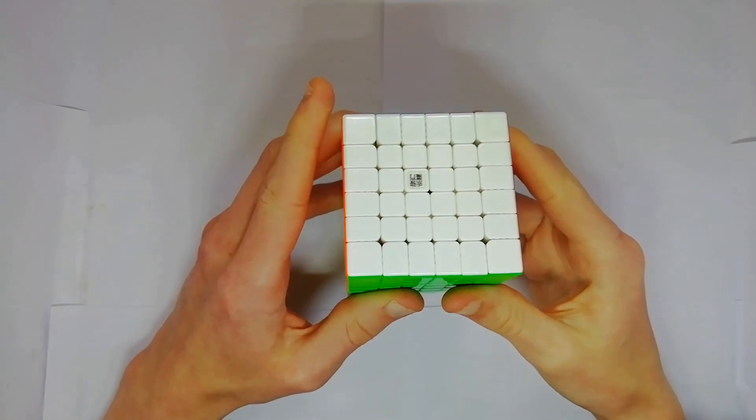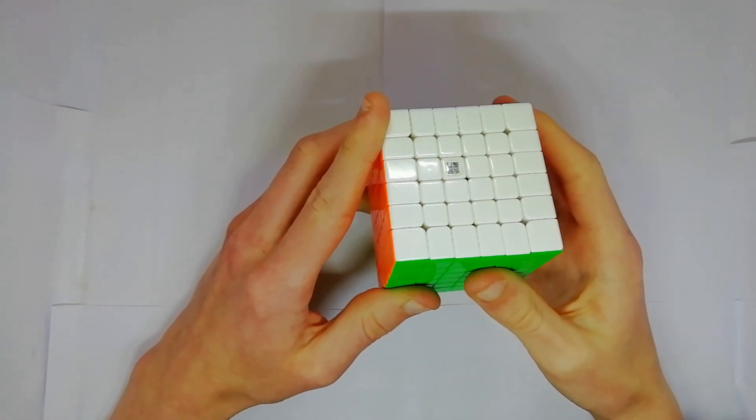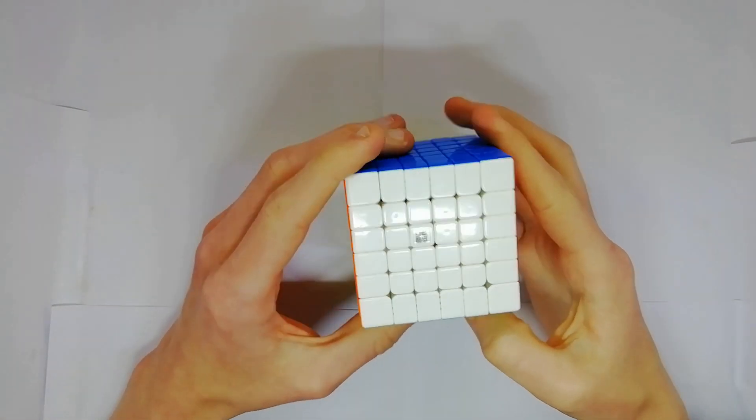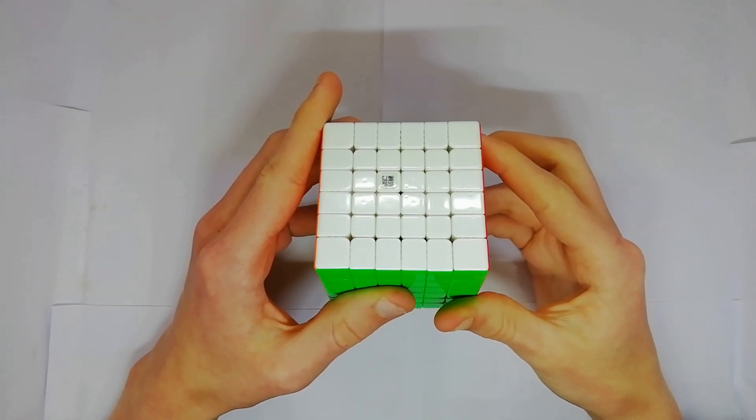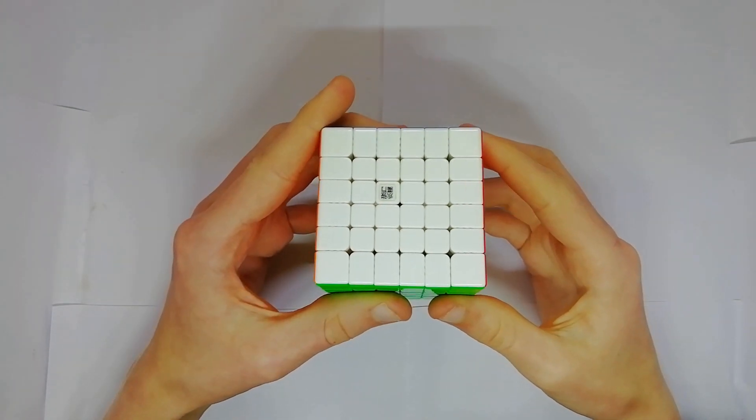The Yuxi V2M comes in at just £14, making it the cheapest magnetic 6x6 on the market, and it's actually surprisingly good for that price.